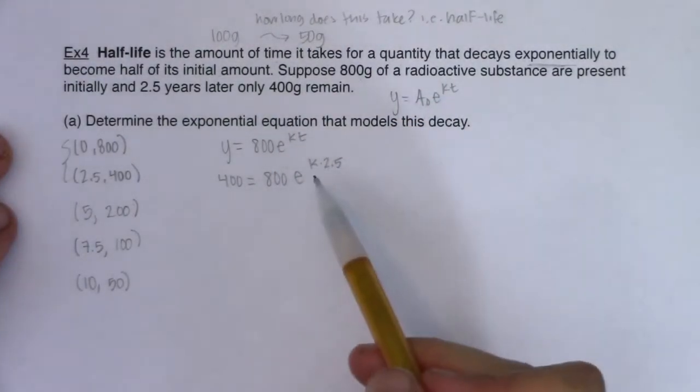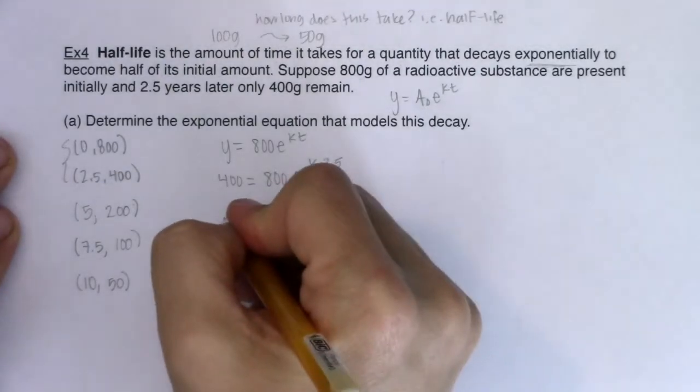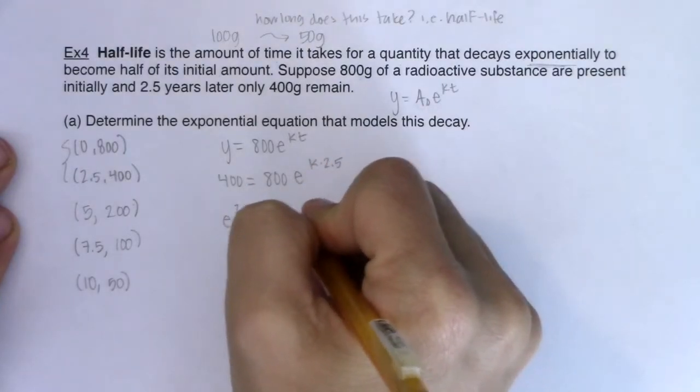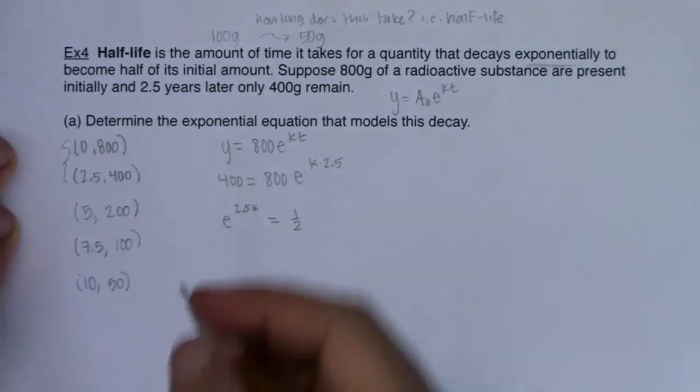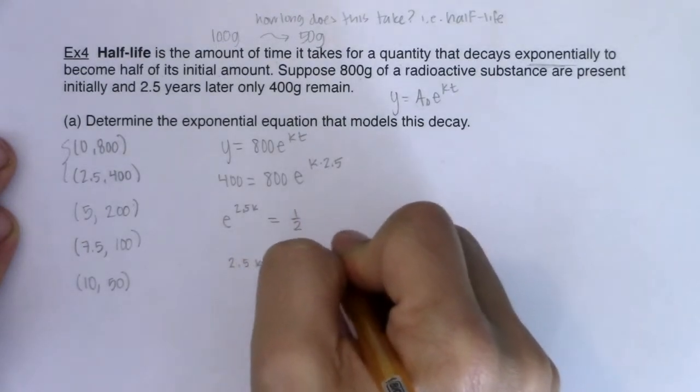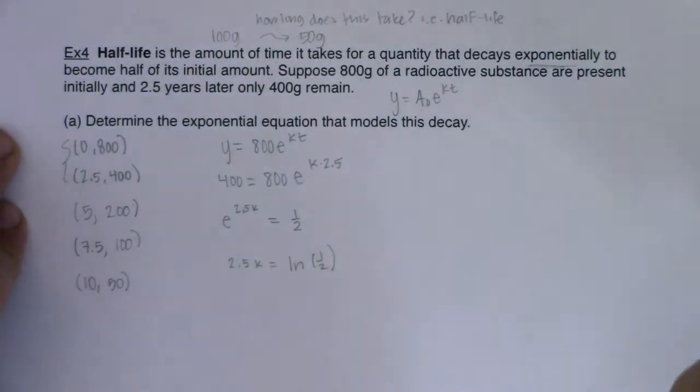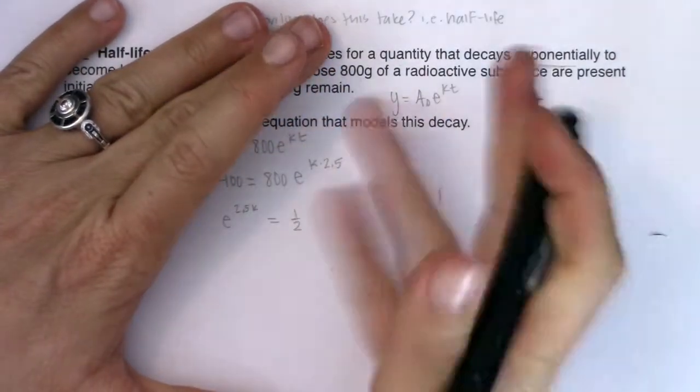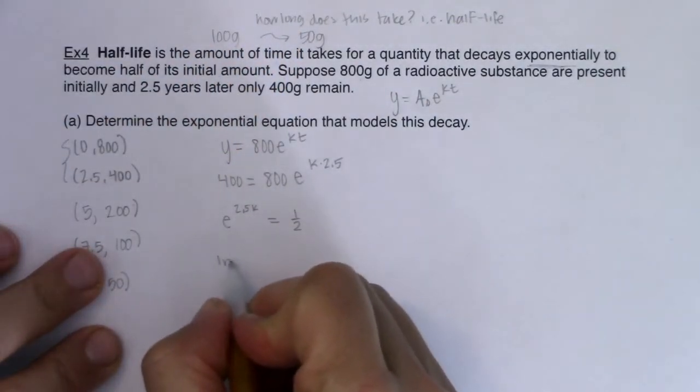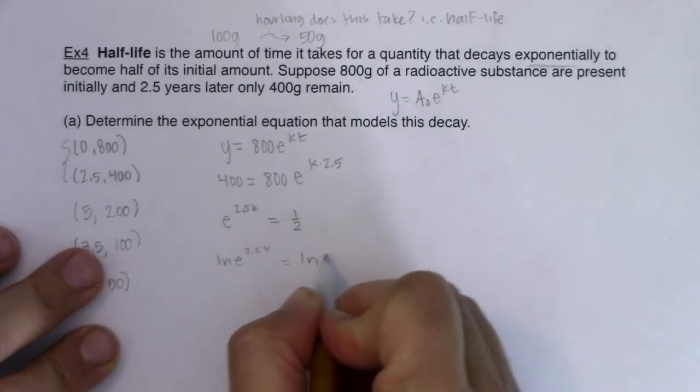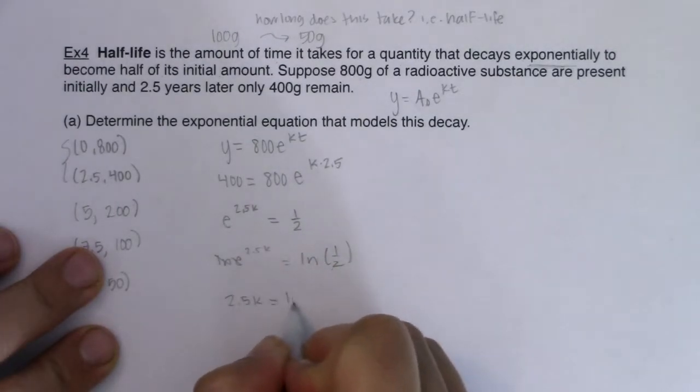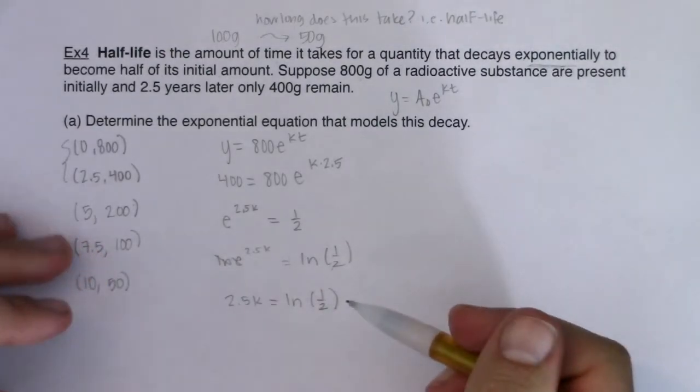Now it's a matter of solving this exponential equation. I want to isolate the exponential term, so I'm going to divide both sides by 800, and I will get e to the 2.5k equals one-half, or you could write it as decimal point five. I'm going to take the natural log of both sides. When I log both sides, let me not skip that step: natural log of e to the 2.5k equals natural log of one-half. These will cancel, so 2.5k equals the natural log of one-half.